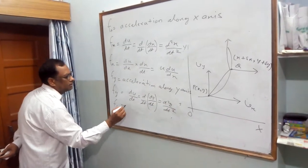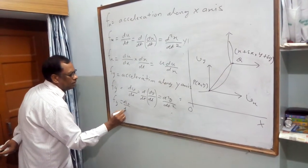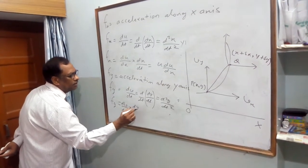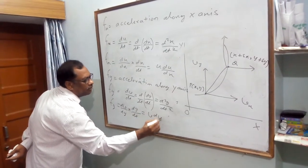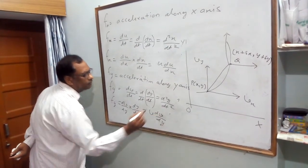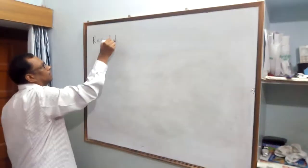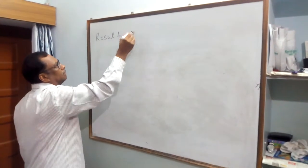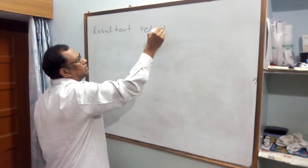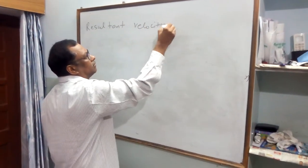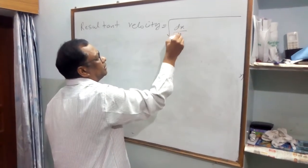Alternatively, Fy equals dv/dy times dy/dt, that is, v dv/dy.